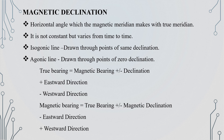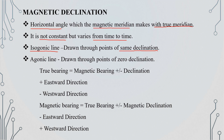Magnetic declination is the horizontal angle that the magnetic meridian makes with the true meridian. Magnetic declination is not constant — it varies from time to time. Points of zero declination are called isogonic lines. The true bearing equals magnetic bearing plus or minus declination: True Bearing = Magnetic Bearing ± Declination.